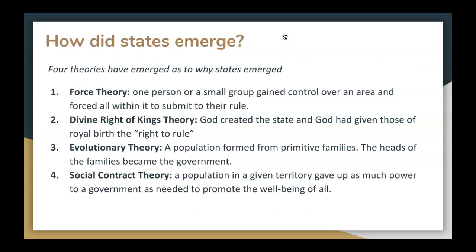Where did government come from, though? Why do we need states? There are four basic theories for how and why we have government. Force theory: one person or small group gained control over an area and forced all within it to submit to their rule — by force, government was essential to eliminate opposition and make things function. The divine right of kings theory: many people believe that government came to be because God created the state and gave those of royal birth the right to rule, meaning the earliest governments came from divine inspiration given to certain people to rule over others.